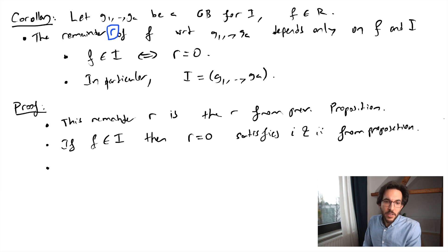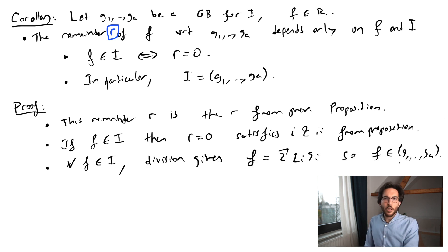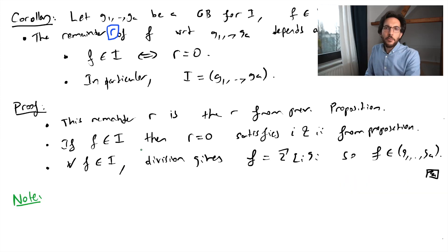And finally, obviously, if F is inside the ideal, then the division produces remainder zero, so that F will be an expression in terms of g_i's. So that F is inside the ideal generated by g1 through ga. So that gives us part of the inclusion, the reverse inclusion is trivial.